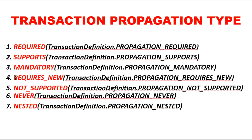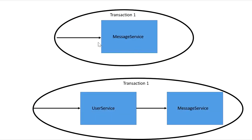The fourth propagation type is REQUIRES_NEW. It will always create a new transaction every time, even if there is an existing transaction. The existing transaction is suspended while the new one runs.